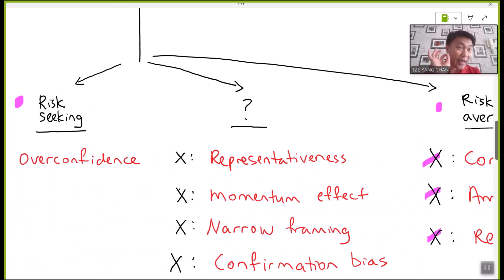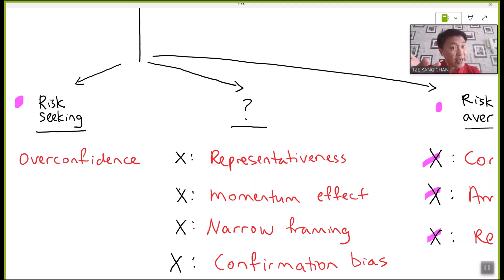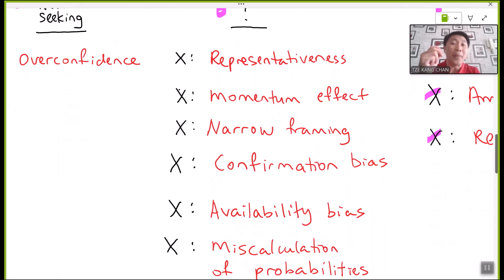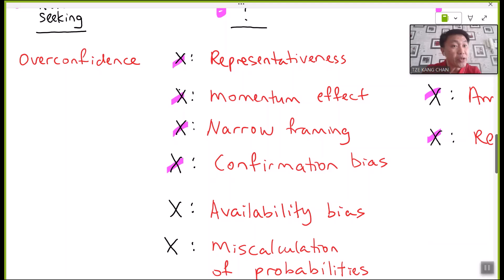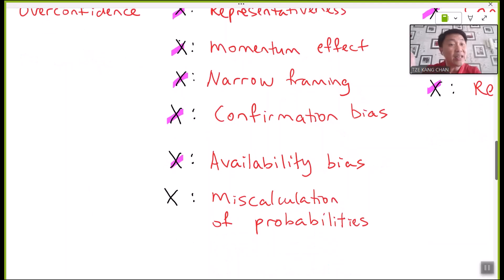Another group of behavioral finance may lead the investor or decision maker to be undecisive as to whether they should be risk-seeking or risk-averse. These undecisive directions of risk appetite may be led by representativeness, momentum effect, narrow framing, confirmation bias, availability bias, and miscalculation of probabilities.